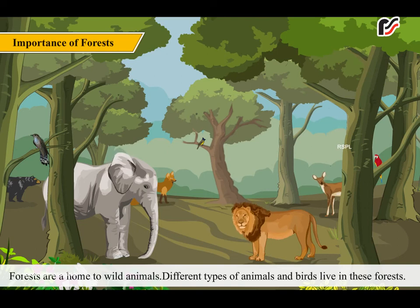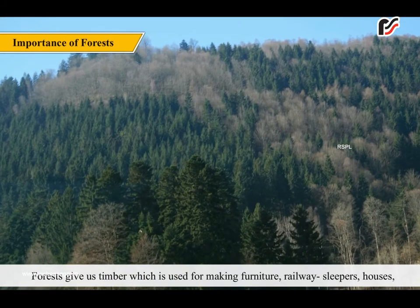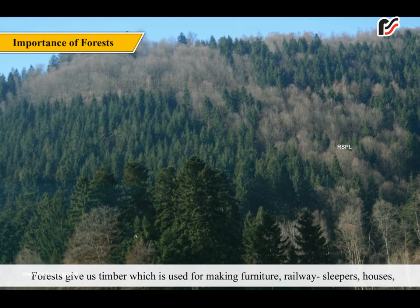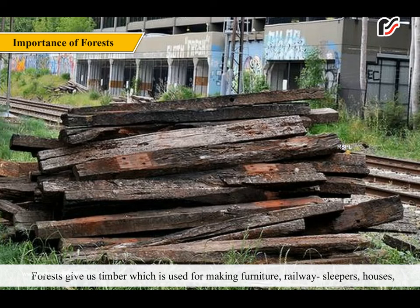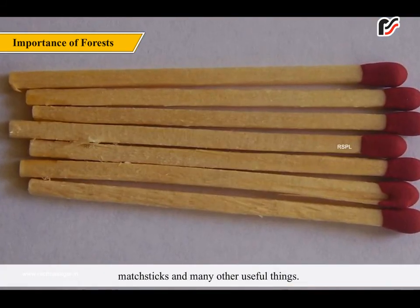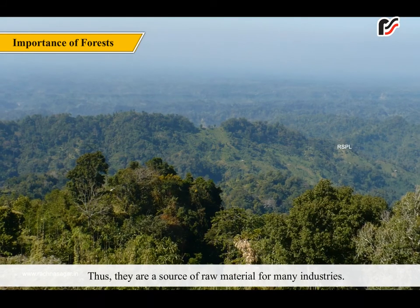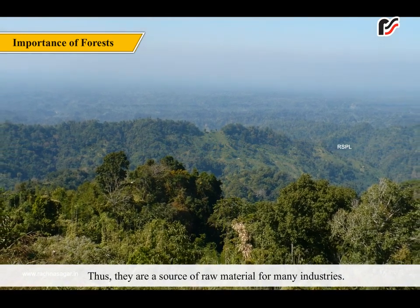Forests are a home to wild animals. Different types of animals and birds live in these forests, and they get their food from the forests. Forests give us timber which is used for making furniture, railway sleepers, houses, bath sticks and many other useful things. Thus, they are a source of raw material for many industries.